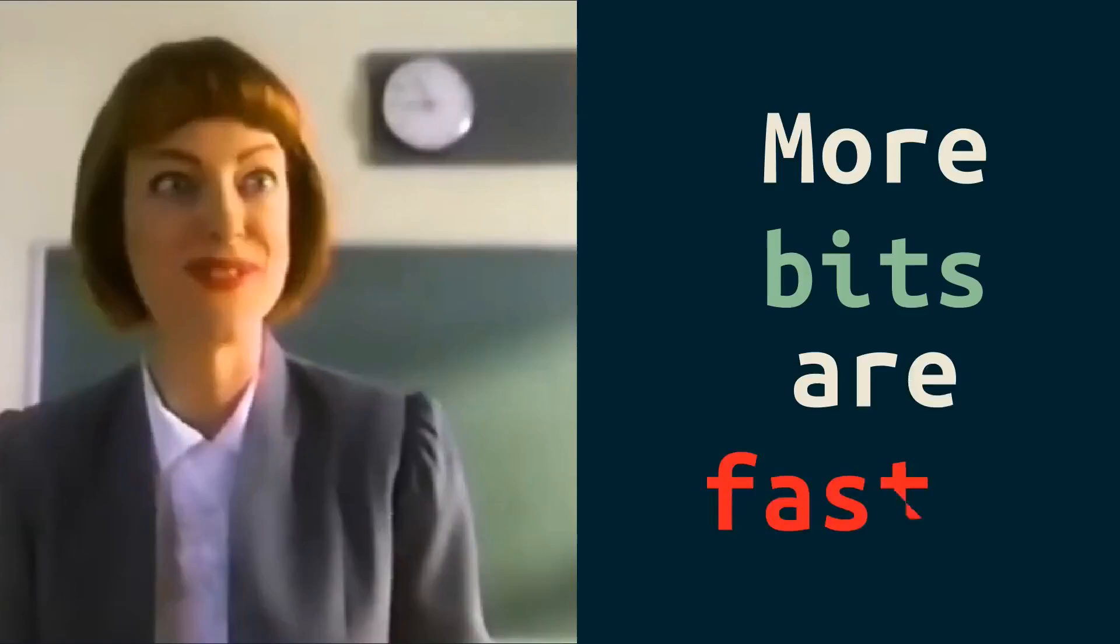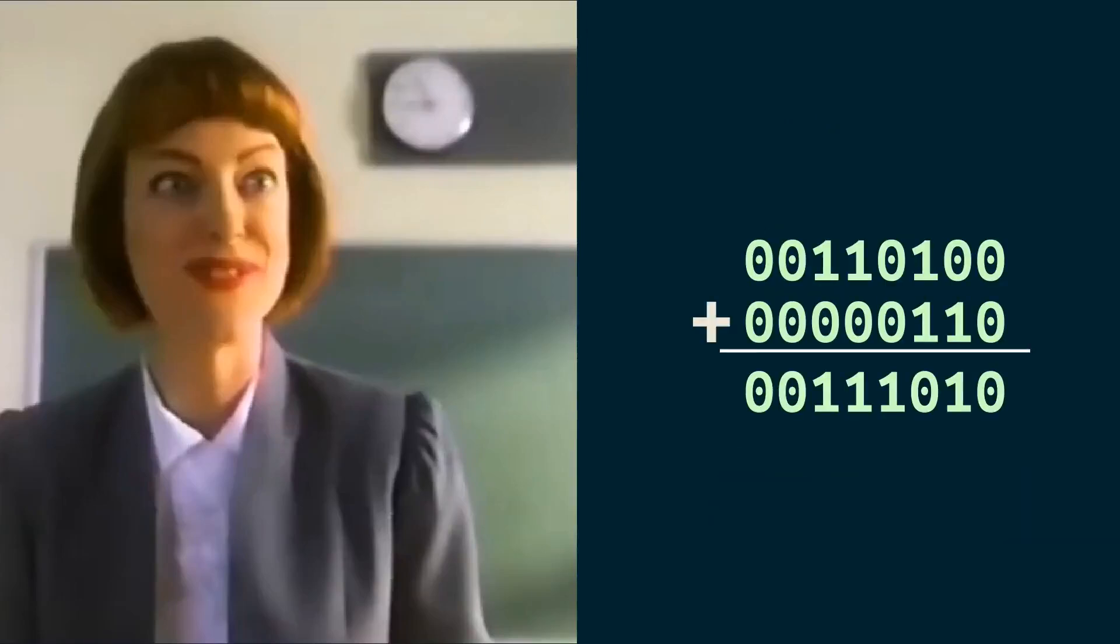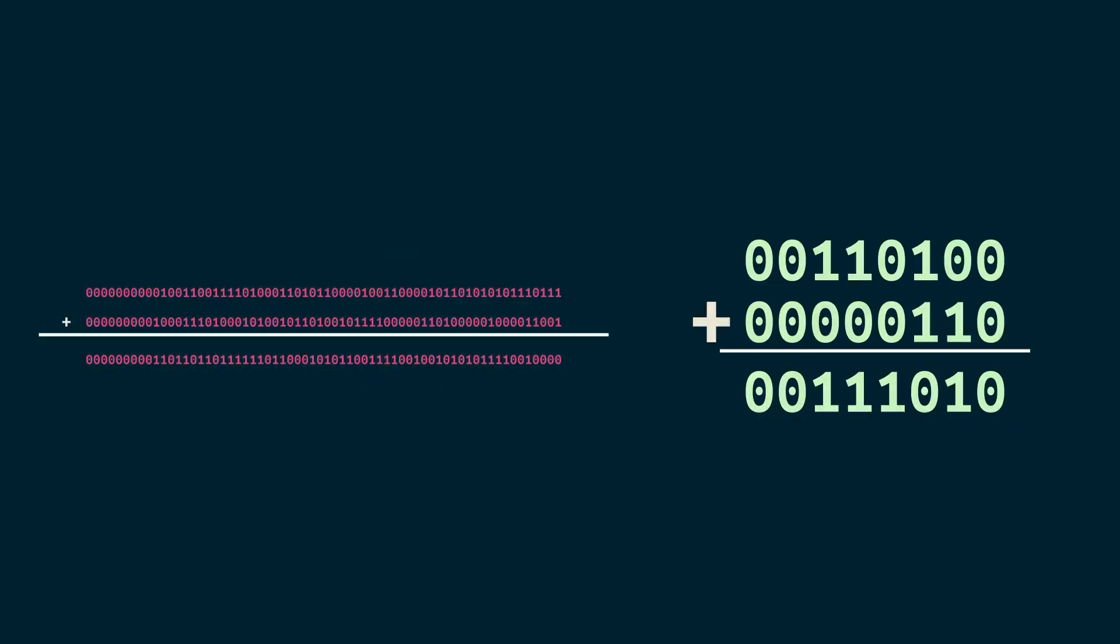The teacher is pushing this idea that more bits are faster. But if we're just doing math, and I'll tell you AI models are actually just massive systems of math, why would short, simple numbers like this be slower than numbers like this? They're not.